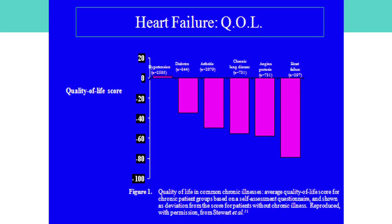This is a study done by Stuart and colleagues to show how bad the quality of life of heart failure patients is. They took into consideration six chronic diseases: angina, diabetes, arthritis, and chronic lung disease. As you can see from the self-assessment questionnaire study, heart failure patients felt that quality of life is much worse. Interestingly, hypertensive patients always feel better than normal people.